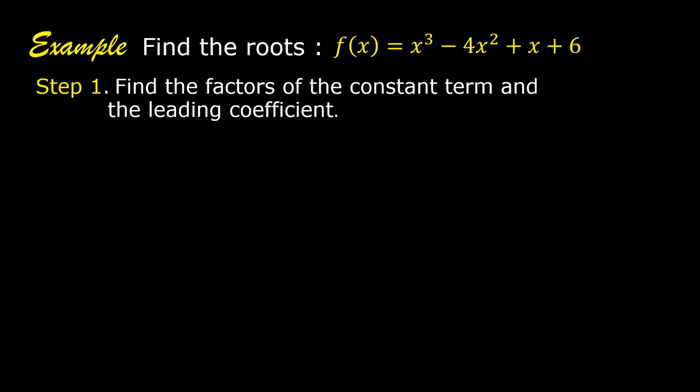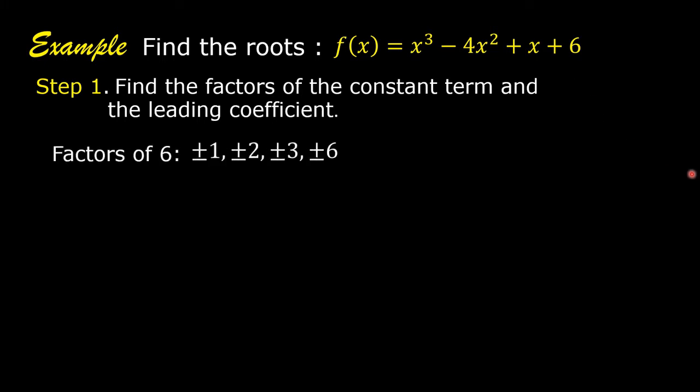The constant term is 6. The factors of 6 are positive and negative 1, positive and negative 2, positive and negative 3, and positive and negative 6.